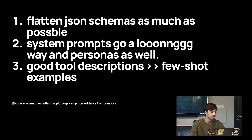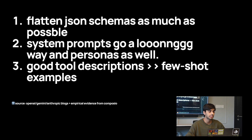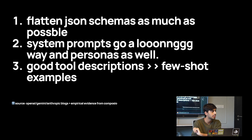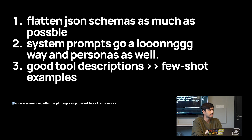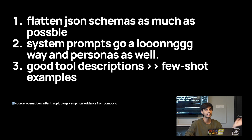The second thing is that system prompts go a long way, and personas as well. If you just tell the LLM that it is expected to call tools, expected to do some reasoning, or expected to chain things together, it just performs better. Even just listing the available functions in the system prompt helps. I also explain how OpenAI and Anthropic might be doing this internally when you use their tool call APIs.